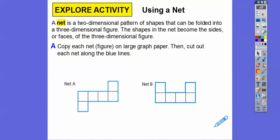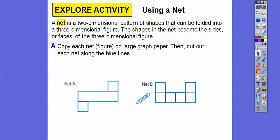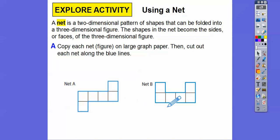So let's copy each of these net figures on large graph paper. Pause it right here — click anywhere in this video and it should pause. Have the students copy these figures down on graph paper, and then please cut them out. What we're going to do is fold along the black lines. Cut out along the blue lines and then fold on the black lines.